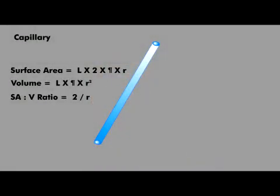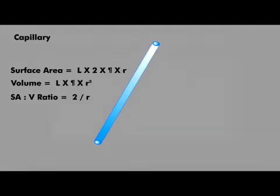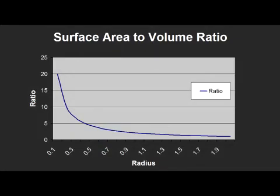A capillary can be considered a very small diameter tube. Capillaries are unique in that they possess a high amount of surface area relative to the capillary's inner volume. As you make the capillary tube smaller and smaller, the ratio of surface area to capillary volume increases.